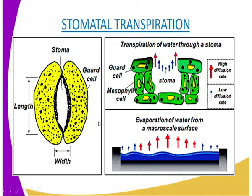As you can see, in the stomata you find the guard cells, whereby the guard cells are able to open and close to allow either the opening and closing of the stomata. The water vapour, when it reaches the stomata, which are found on the upper epidermis, is able to evaporate to the atmosphere. As you can see from the diagram, we have the guard cells and the mesophyll cells — these surround the stoma, which is the singular for stomata.